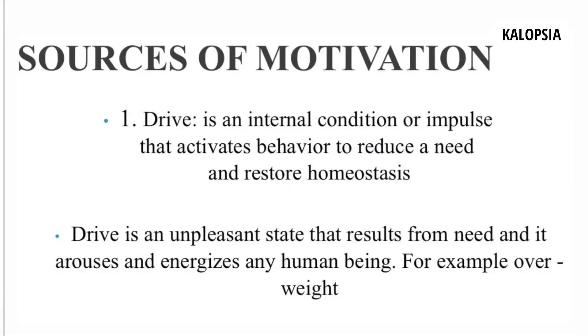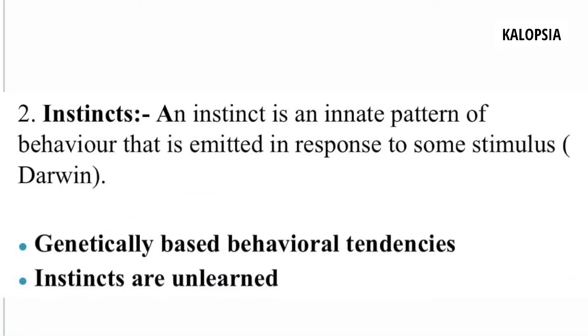The next topic is sources of motivation. Basically there are six sources of motivation. The first one is drive. Drive is an internal condition or impulse that activates behavior to reduce a need or restore homeostasis. It is an unpleasant state that results from need and it arouses and energizes any human being — for example, if a person is overweight they will have a drive to reduce that weight. The second source is instinct. An instinct is an innate pattern of behavior emitted in response to a stimulus, as defined by Darwin — it refers to genetically based behavioral tendencies.